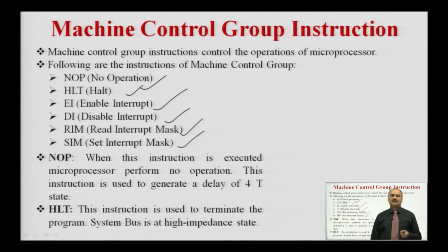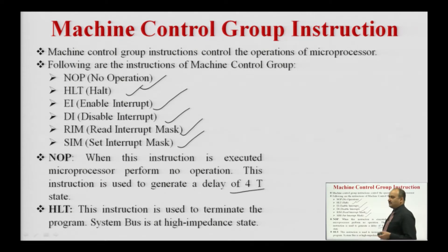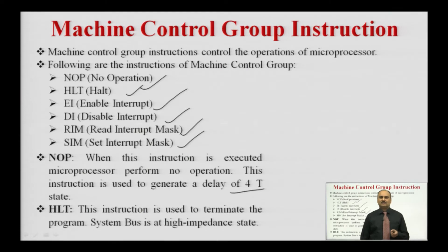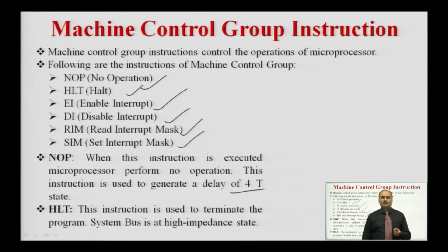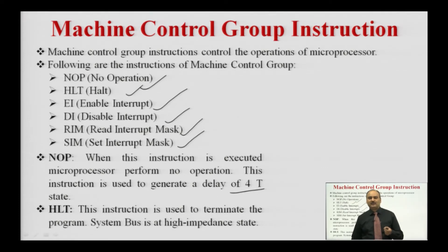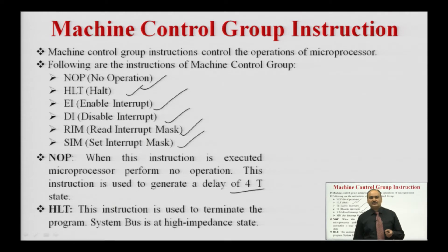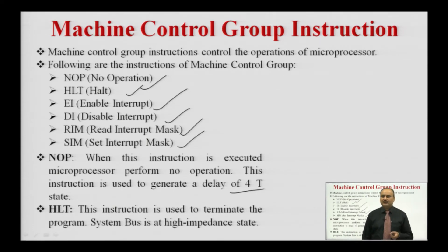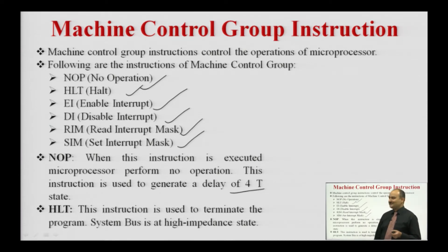The NOP instruction is used to generate a delay of 4T states. To execute the NOP instruction, the opcode fetch machine cycle is required to fetch the instruction, and this opcode fetch cycle requires 4T states. So if you want to generate a delay of about 4T states, we use the NOP instruction. This is the use of the NOP instruction in the machine control group.